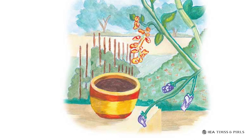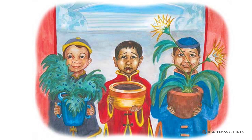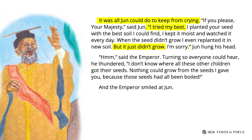The Emperor walked down the rows of children holding huge, blossoming plants with a frown. He scowled even more when he came to Jun and said, "You brought me an empty pot?" Jun tried to keep from crying. "I tried my best, but it just didn't grow." Jun hung his head. Then, turning to everyone, the Emperor thundered, "Nothing could grow from the seeds I gave out, because they've all been boiled." And the Emperor smiled at Jun.